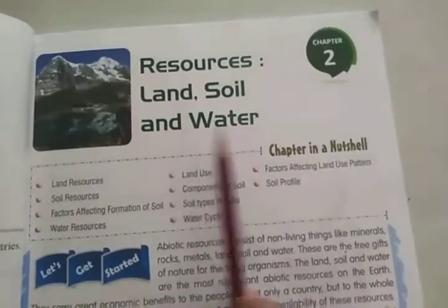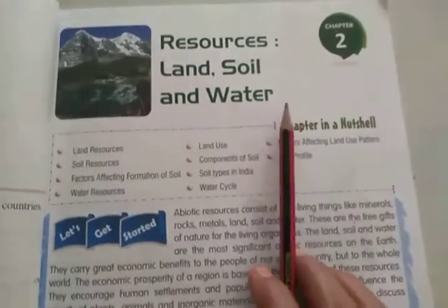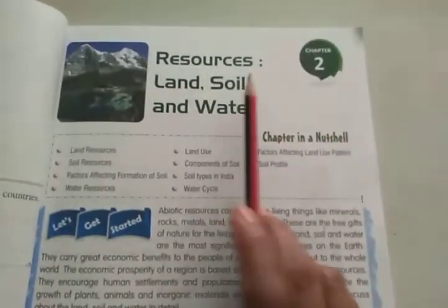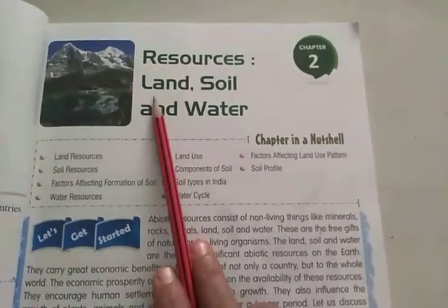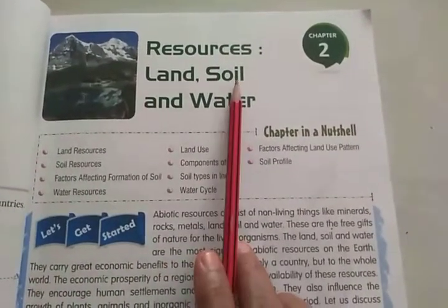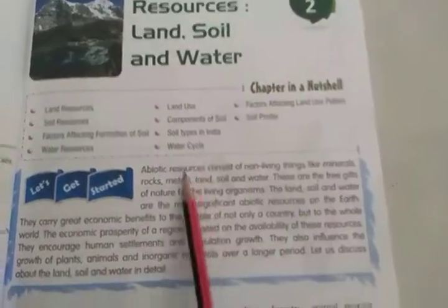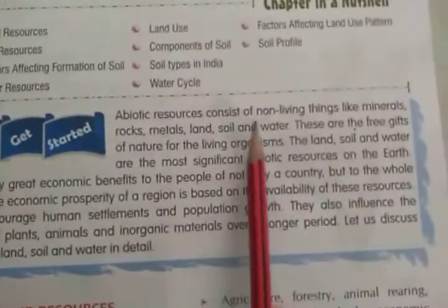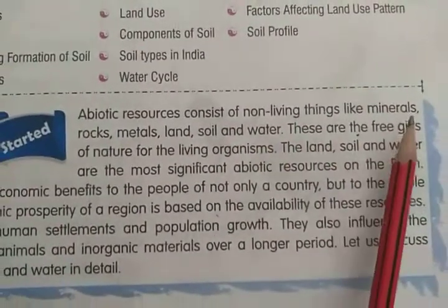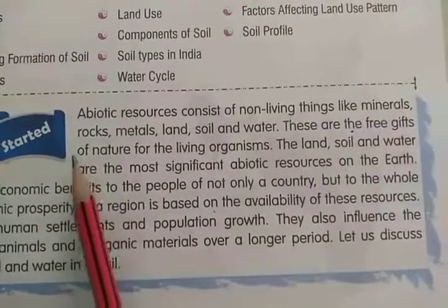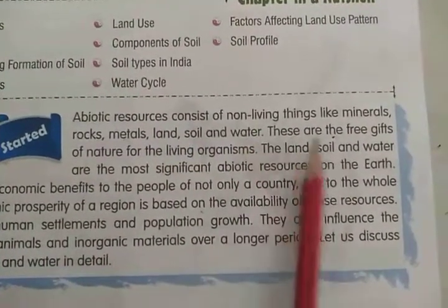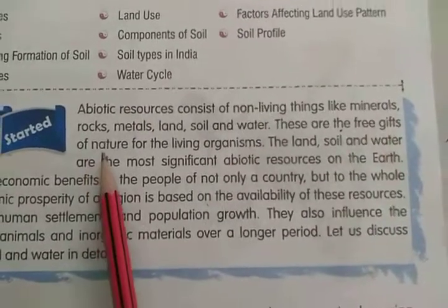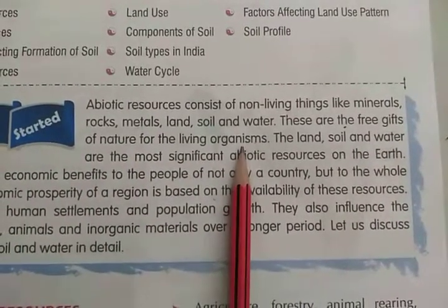Resources: land, soil and water. We are going to explain about the resources — prakritik sampada jo hamare paas hoti hain, bhagwani ya prakriti humay dete hain — land, soil and water. Abiotic resources consist of non-living things like minerals, rocks, metals, land, soil and water. These are the free gifts of nature for the living organisms.